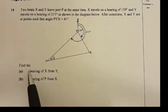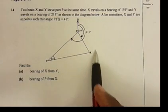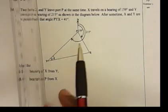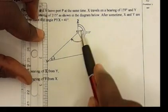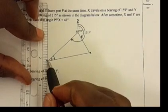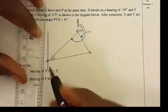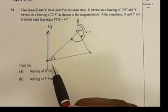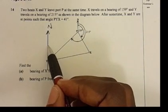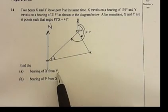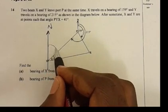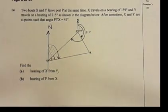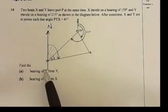Coming to this question: find the bearing of X from Y, meaning find the bearing of X whilst standing at Y. At point Y, you draw a north line — this north should be parallel to the other north. Bearing is measured from the north clockwise until we meet the line connecting X and Y.